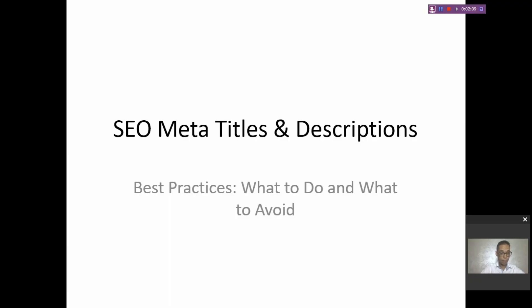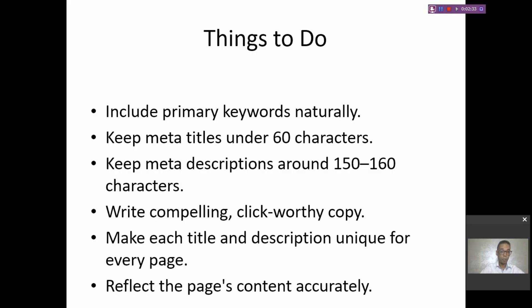The second part of this course is SEO meta titles and descriptions. I'm going to show you the best practices — what to do and what to avoid — because this is so important, as it's the first thing people will see on search engines before going to your website. First: include primary keywords naturally. For example, if you are selling t-shirts for men, include that in the meta title and meta description. Avoid putting something irrelevant just to grab clicks.